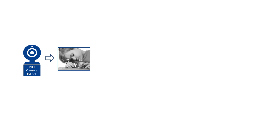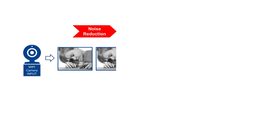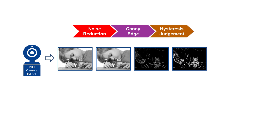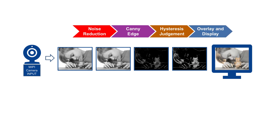This configuration implements canny edge detection, which involves a sequence of three different functions. First, a median filter removes noise from the image. Then, the canny algorithm identifies edges in the image. Finally, hysteresis judgment is applied to discern significant edges to display versus artifacts to discard. The last step in our demo is to display the edges produced by this sequence as an overlay on the original video image.